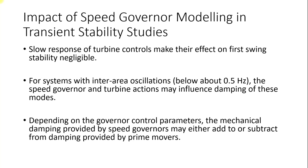Depending on the governor control parameters, the mechanical damping provided by the speed governor may either add to or subtract from the damping provided by the prime mover. For example, when one of the lines is tripped, the power on the other line was oscillating. This oscillation of power can be impacted by the governing control system because the change in power will be sensed by the governor, and the governor will respond in order to counteract this oscillation. If your governor is properly tuned, it will reduce this oscillation. But if the governor is not properly tuned, it may result in adding to the already existing oscillation and cause the oscillations to grow.